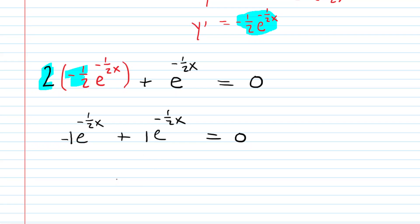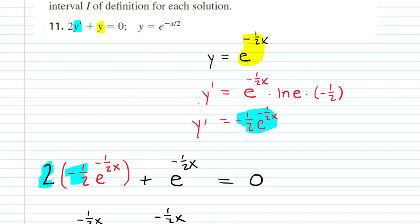Adding those like terms together gives us 0. So 0 = 0. This verifies that the given solution is indeed a solution of the given differential equation.